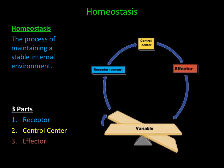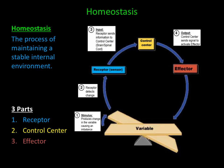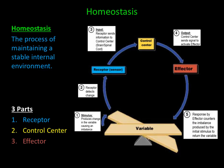Let's take a closer look at homeostasis in action. First, a stimulus produces change in the variable causing an imbalance. Second, a receptor detects the change. Third, the receptor sends information to the control center. Fourth, the control center sends signals to activate an effector. Finally, the response by the effector counters the imbalance produced by the initial stimulus to return the variable back to homeostasis.